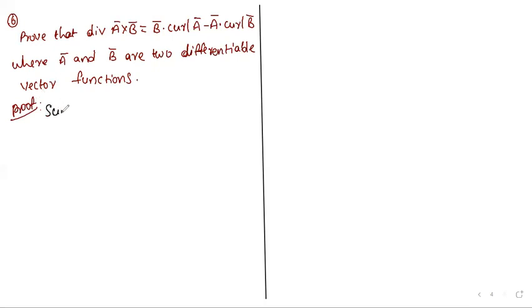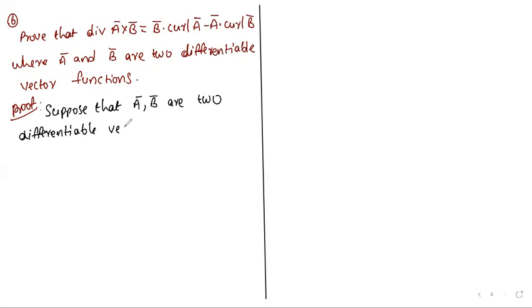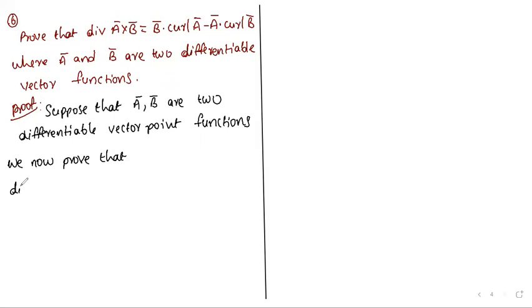Suppose that Ā and B̄ are two differentiable vector point functions. We now prove that div(Ā cross B̄) equals B̄·curl(Ā) minus Ā·curl(B̄).